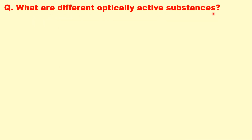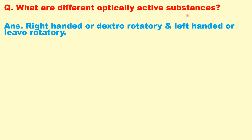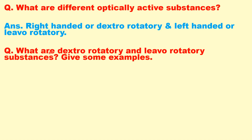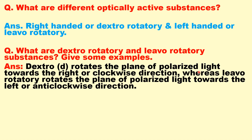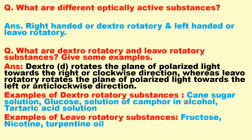What are the types of optically active substances? There are two types: right-handed (dextrorotatory) and left-handed (levorotatory). Dextrorotatory substances rotate the plane of polarized light towards the right (clockwise direction), whereas levorotatory substances rotate it towards the left (anti-clockwise direction). Examples of dextrorotatory materials are cane sugar solution, glucose, camphor in alcohol, and tartaric acid solution. Examples of levorotatory materials are fructose, nicotine, and turpentine oil.